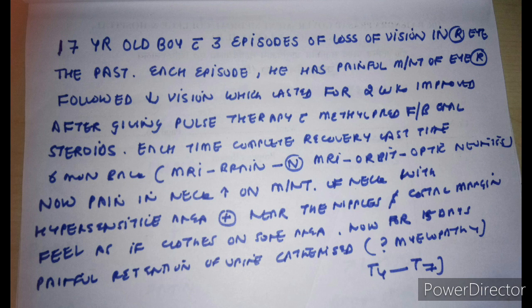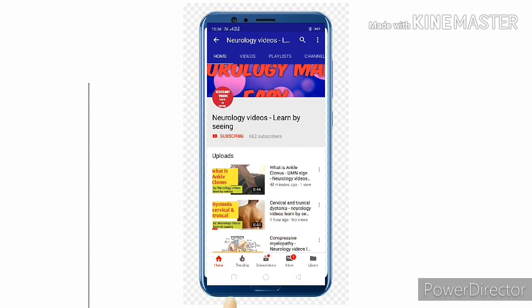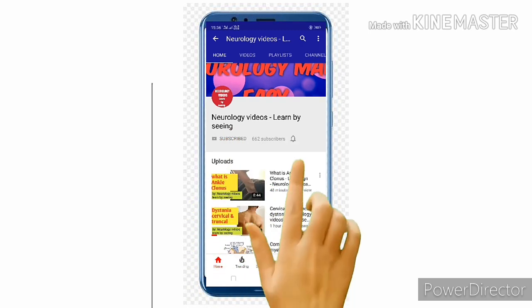CSF oligoclonal bands (OCBs) should also be done — if they come out negative, it rules out MS and goes in favor of NMO. If the patient is confirmed NMO, you must rule out secondary NMO causes including endocrine and autoimmune causes. This was a short case presentation of demyelinating illness.